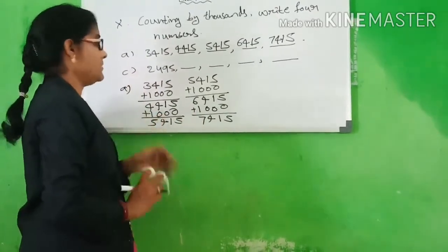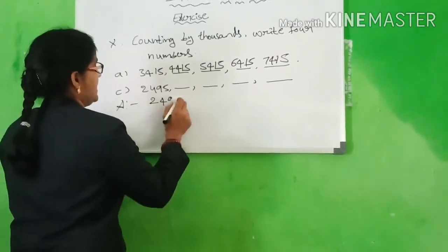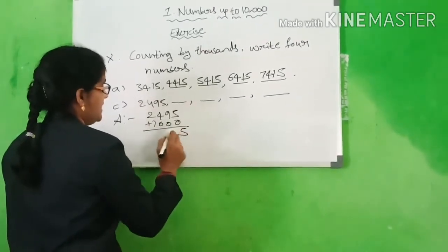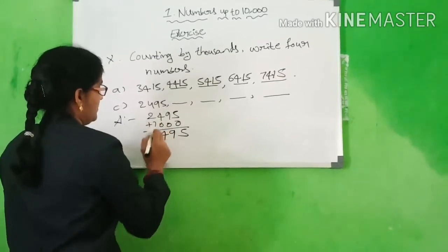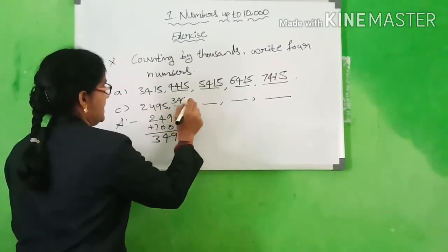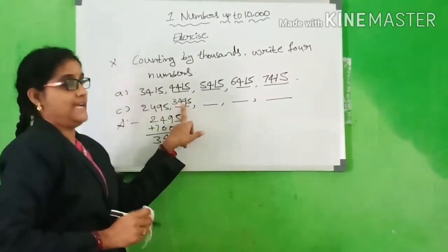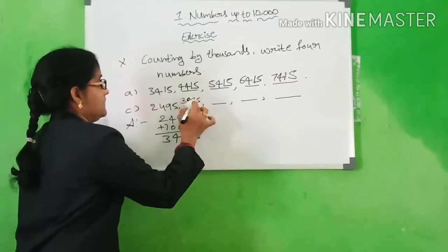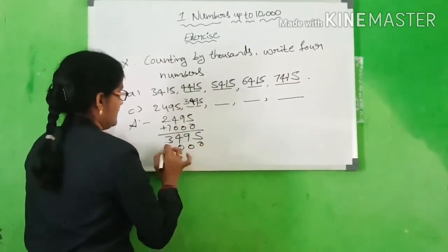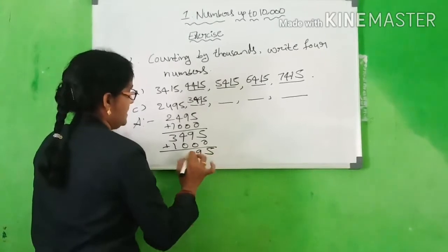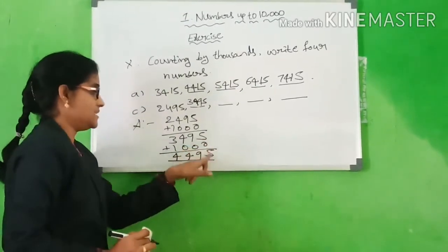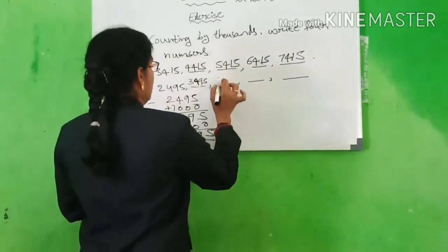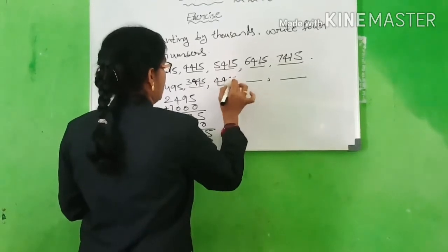Next problem: 2,495 plus 1000. What answer will we get? 5, 9, 4, 2 plus 1 is 3. We get 3,495. 2 after adding 1000 becomes 3000. Then count 1000 more: 5, 9, 4, 3 plus 1 is 4. We get 4,495.